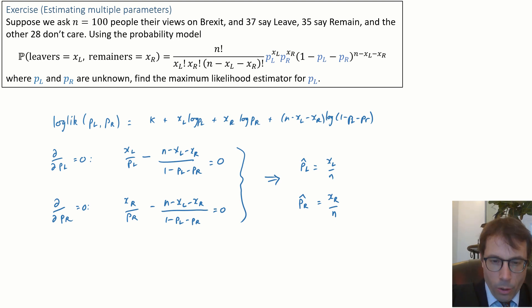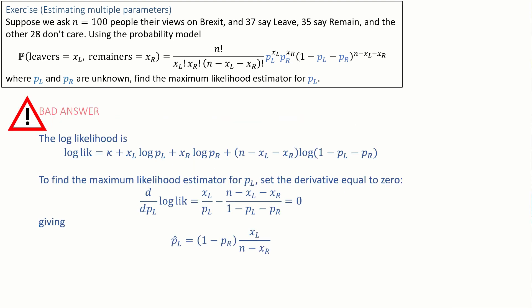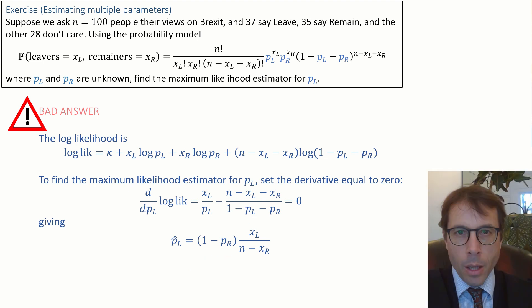So what would go wrong if we tried to estimate just one of the parameters? Here's a bad answer to the question. Suppose we thought, hey, I want to estimate p_L. All I need to do is differentiate with respect to p_L. We'd write out this derivative here, and we'd solve it, and we'll get our answer for p_L hat. And our answer will involve p_R. This is no good because p_R is an unknown parameter. What's the use in an estimate for p_L which depends on something we don't know?